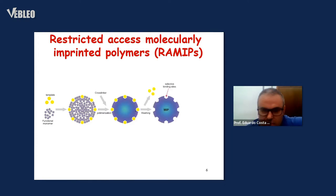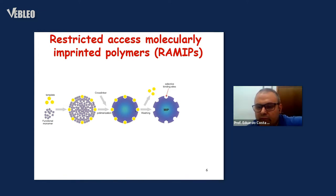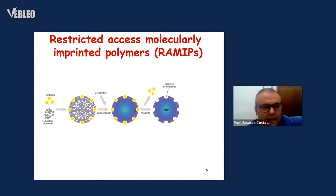After this, we wash the polymer with a wash solution, removing the template and residues from the synthesis. In the end, we have the molecular imprinted polymer with selective binding sites to the template molecule.